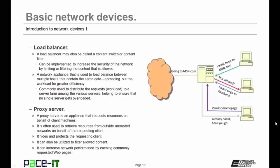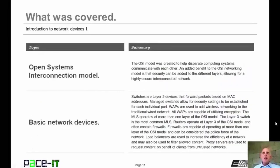Last up, we have the proxy server. A proxy server is an appliance that requests resources on behalf of client machines. It's often used to retrieve resources from outside untrusted networks on behalf of the requesting client. A proxy server hides and protects the requesting client — that outside network never gets to see the internal client. Proxy servers can also be utilized to filter allowed content, and a proxy server can also increase network performance by caching or saving commonly requested web pages. That concludes this session on the introduction to network devices part one.